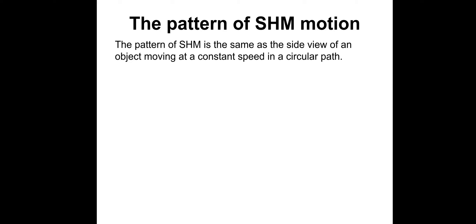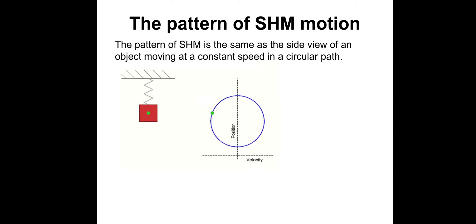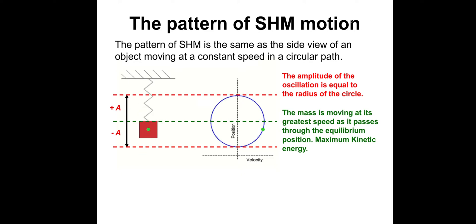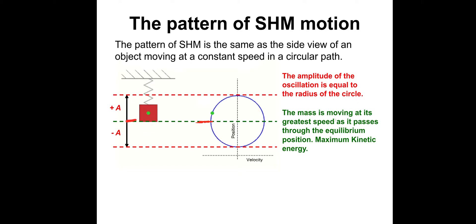So the pattern of SHM, or simple harmonic motion, is the same as the side view of an object moving at a constant speed in a circular path. The amplitude of the oscillation is equal to the radius of the circle. At the equilibrium position, the oscillating mass is moving at its greatest speed, which means it has maximum kinetic energy.